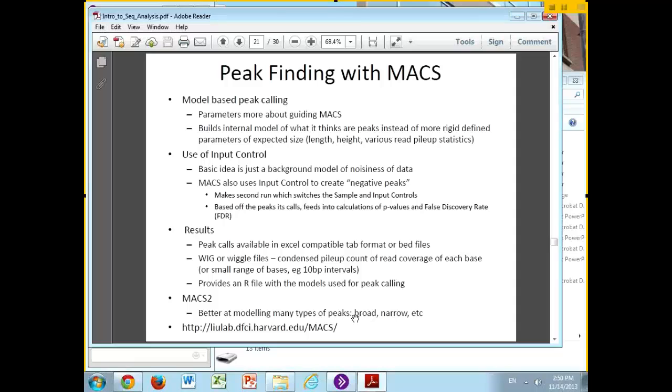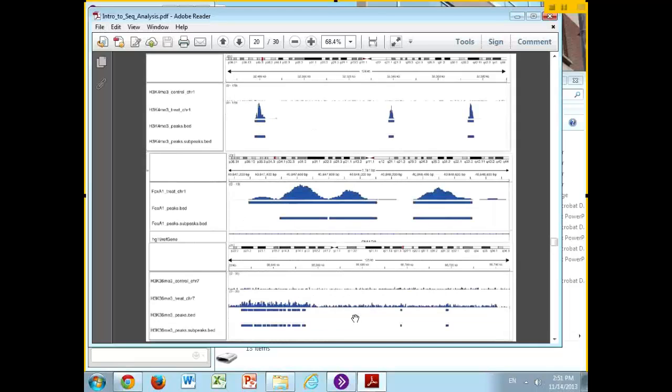The output of MACS has a number of files. The two most useful ones will be an Excel-compatible tab format file with a list of locations, start and end of what it thinks the peak is, a score for how good it thinks the peak is, the p-value, and the FDR value for each. It also provides BED files, which are the exact same data you see in the Excel file except in BED format so these can be loaded up to the UCSC browser, with a start and stop and some score value.